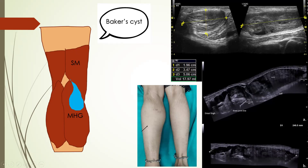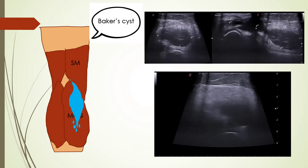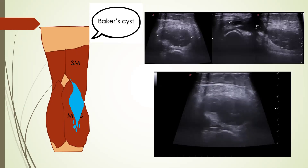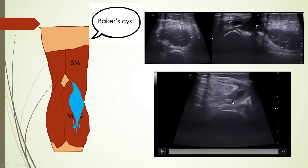Here we can see synovial thickening filling the Baker's cyst, and in this panoramic image it is extending from the distal thigh up to the mid-calf. We can also encounter rupture of a Baker's cyst, where the patient presents with severe calf pain and swelling. In this video the Baker's cyst has ruptured into the subcutaneous and intermuscular planes, which can clinically mimic deep venous thrombosis.